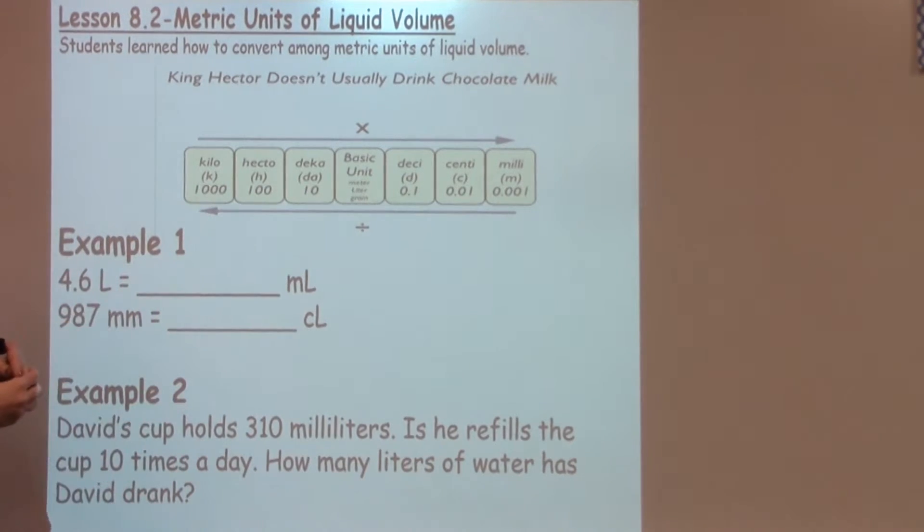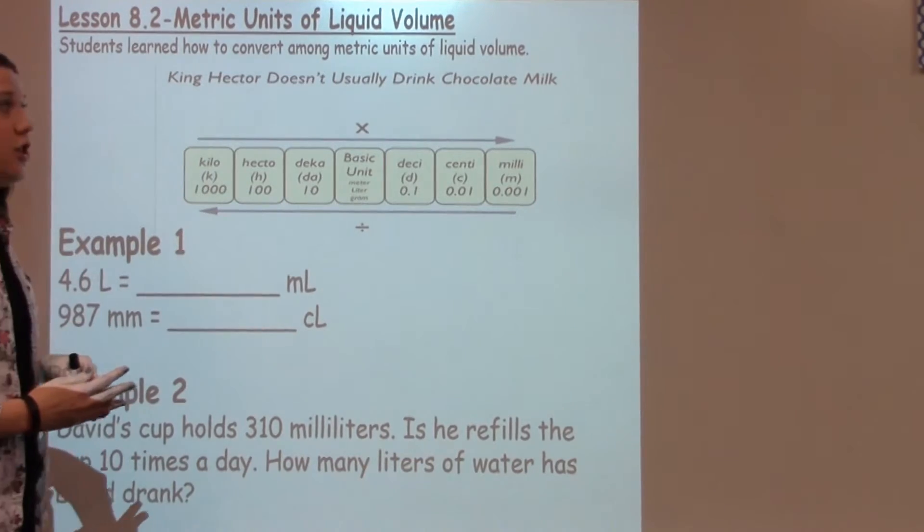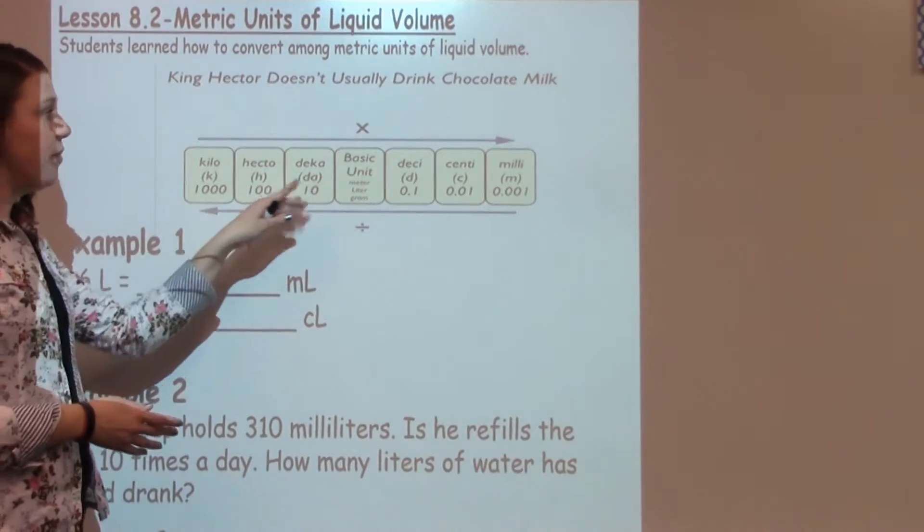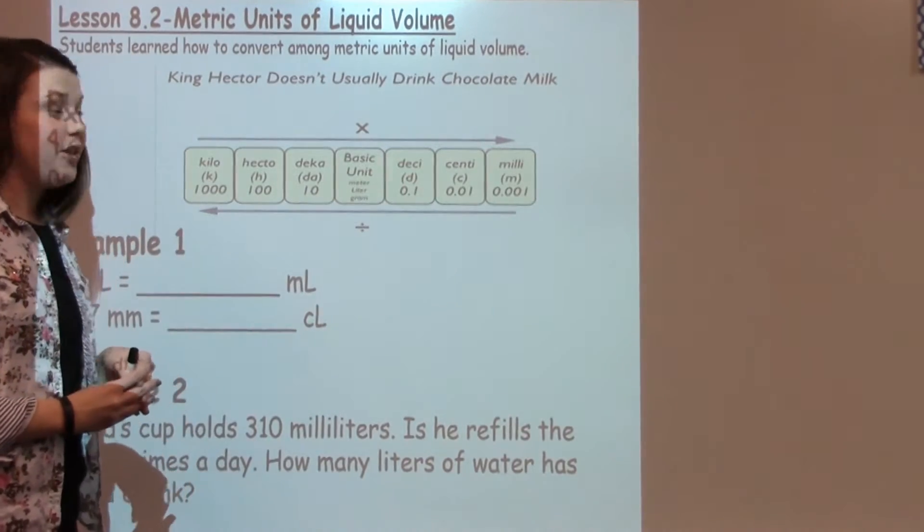So as a review, your students should know King Henry or King Hector doesn't usually drink chocolate milk. This is what we've been familiar with in class as a quick review of the metric system.